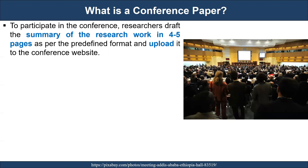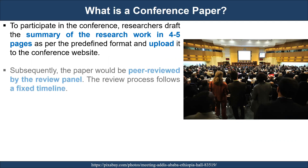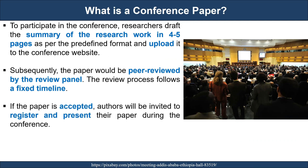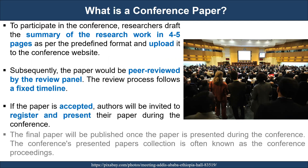To participate in a conference, researchers draft a summary of their research in a short 4–5 pages as per a predefined format and upload it to the conference website. Subsequently, the paper would be peer-reviewed by the review panel. The review process follows a fixed timeline for conferences. If the paper is accepted, the authors will be invited to register and present their papers during the conference. The final paper will be published once presented, and the collection of presented papers is often known as the conference proceedings.